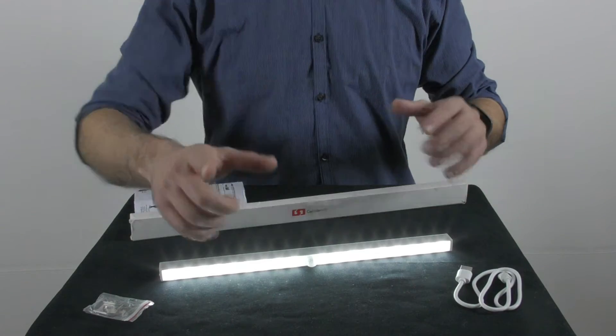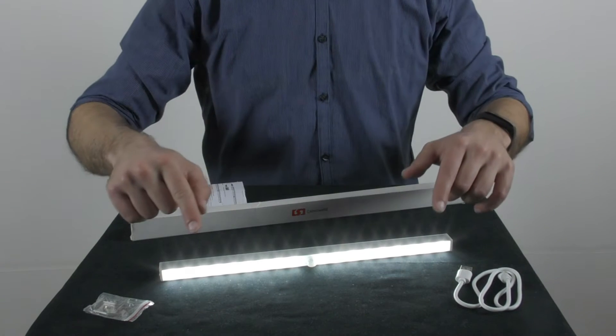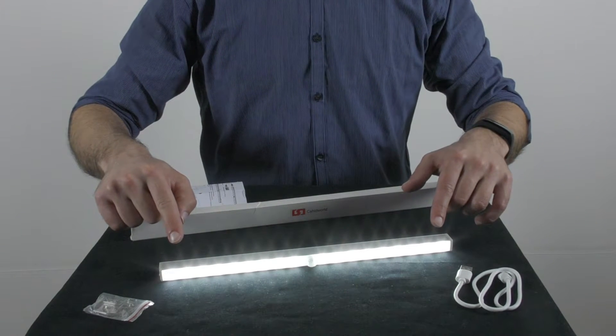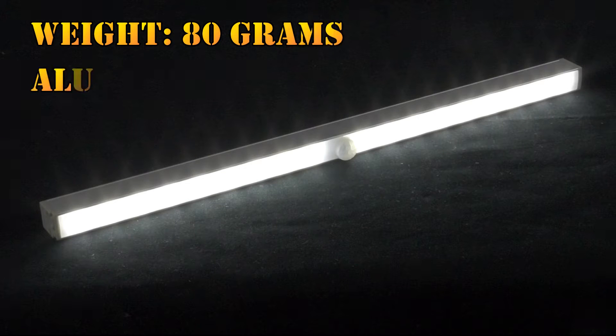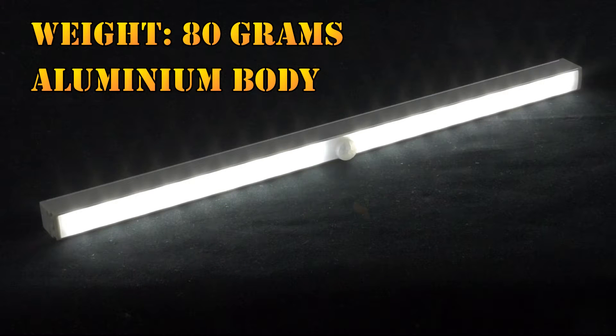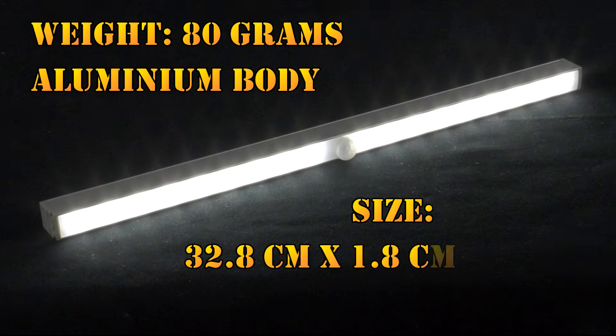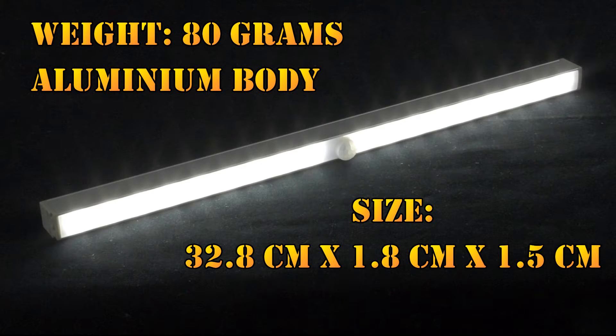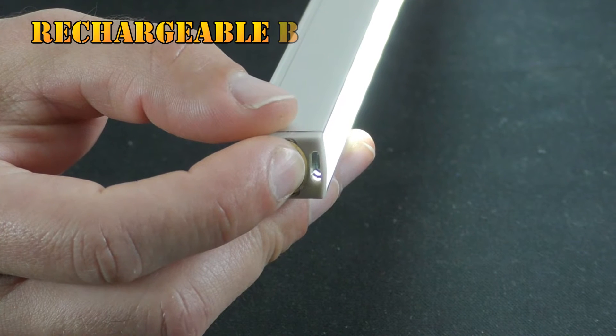Well boys and girls, especially the girls, what we have here is a rechargeable LED light bar. The item itself weighs 80 grams, which makes it very light. It looks like a long and thin metal bar with an aluminum body combined with ABS. Its measurements are 32.8 centimeters by 1.8 centimeters by 1.5 centimeters.